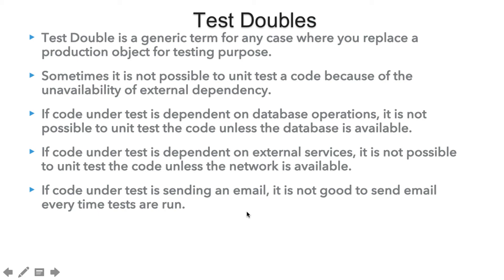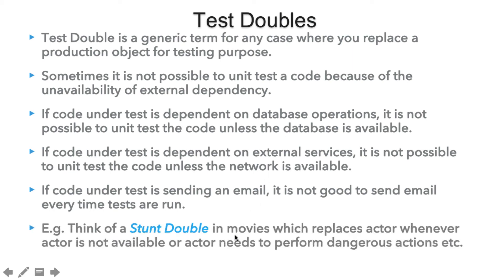In order to remove these external dependencies — like database, network, and external servers — we create test doubles. As an example, we can think of a test double as a stunt double in movies, which replaces an actor whenever the actor is not available or needs to perform some dangerous actions. Instead of the actor performing the dangerous action, the stunt double comes into picture and does the job. Similarly, test doubles are the replacement of external dependencies when we do our unit testing.